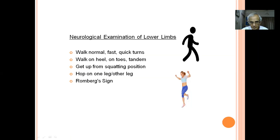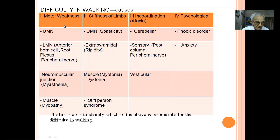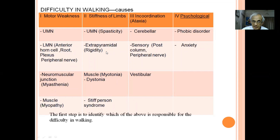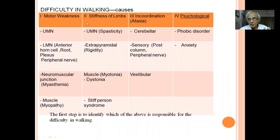If everything is normal and yet the patient subjectively complains of imbalance, that is psychogenic ataxia — not uncommon in the OPD. Lastly, do a Romberg sign. To summarize: difficulty in walking — is it motor weakness (UMN or LMN)? Is it stiffness (spasticity, rigidity, dystonia)? Or is it really incoordination — ataxia, either cerebellar, sensory, or vestibular? Eliminate motor weakness, eliminate stiffness, and if the problem persists, it is ataxia.